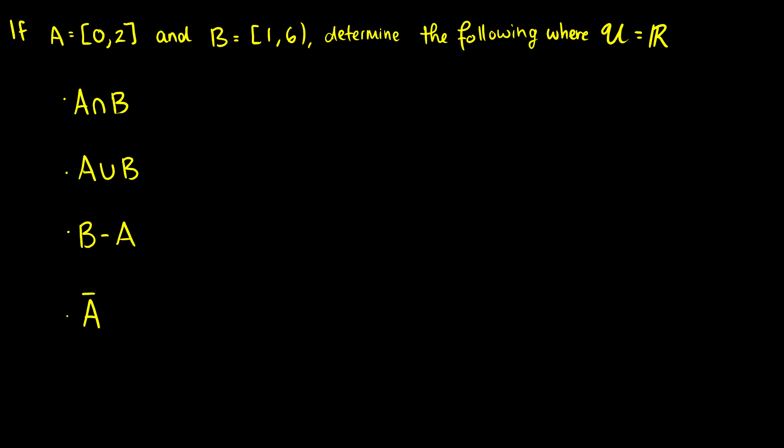For the first one, if A is the interval containing 0 up to 2 and B is the interval starting at 1 containing up to but not including 6, we want to determine the following where our universe is the entire real number line. So these are not discrete sets, these are continuous sets. So I'll show you how to work with these.